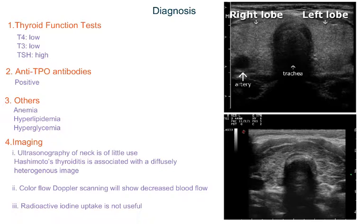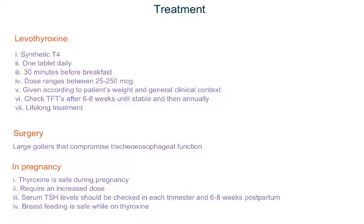Treatment of Hashimoto's thyroiditis is very simple — we give levothyroxine, which is a synthetic T4. It is a small tablet taken once daily, 30 minutes before breakfast or any other medication, because other medications can interfere with its absorption. The dose ranges between 25 to 250 micrograms, generally given at approximately 1.6 to 1.7 micrograms per kg body weight. In severe hypothyroidism, we can start from a higher dose. In patients with heart failure, we start with the lowest dose of 25 micrograms. TFTs should be checked after six to eight weeks until the patient becomes stable, and then annually.